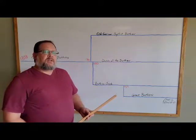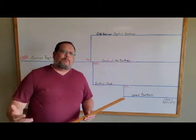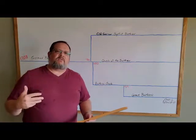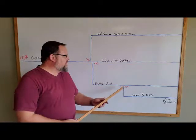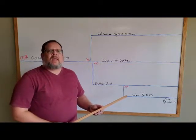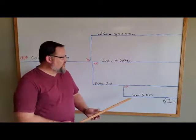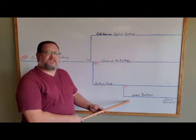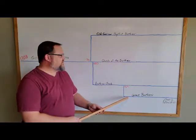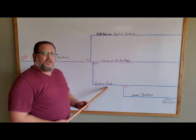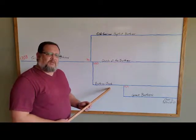This split came mainly because of a division due to the fundamentalism of the time and also the dispensational theology. The Grace Brethren held on to the dispensational theology and the fundamentalism, whereas the Brethren Church wanted to stay away from those distinctives.